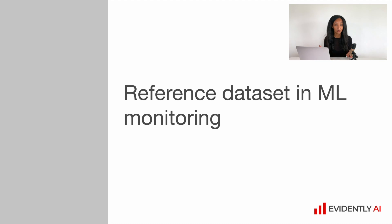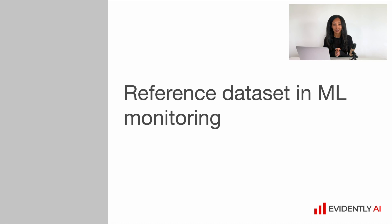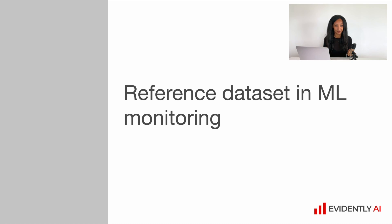Imagine a situation where you have quite a lot of production machine learning models, and each model uses many different features — numerical, categorical, date-time, or unstructured features like text, images, or videos — and you need to set up data quality and data integrity monitoring. Because you need to come up with metrics for each feature and define alert conditions, doing this manually can take quite a lot of time.